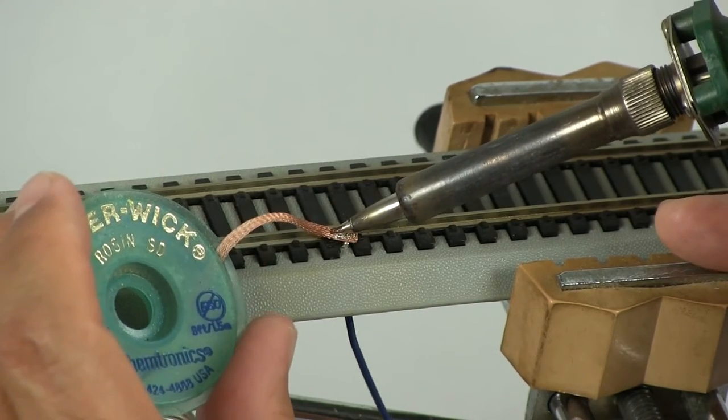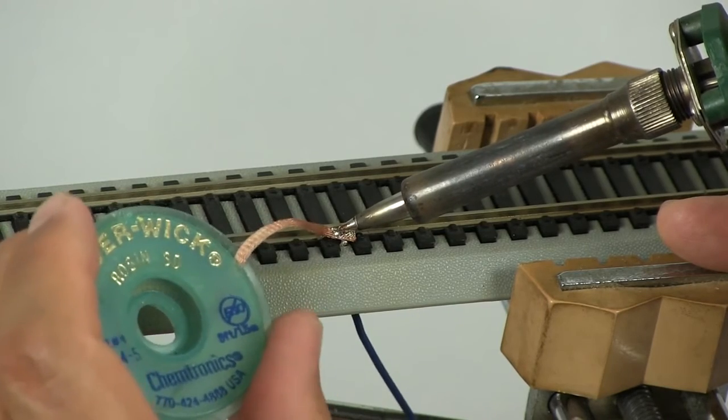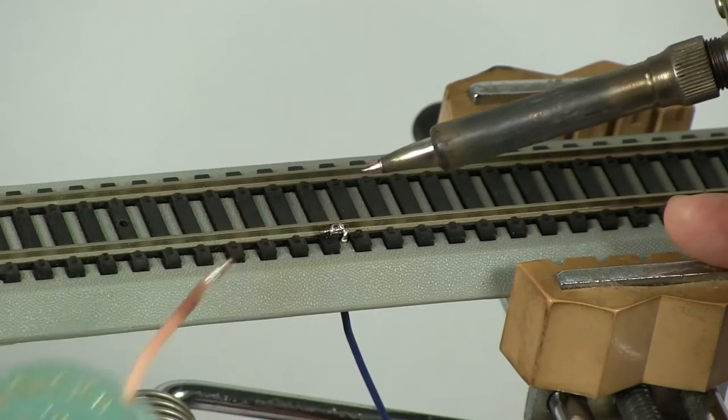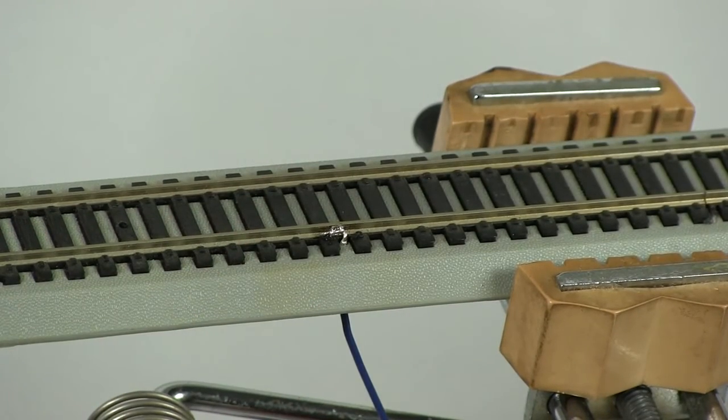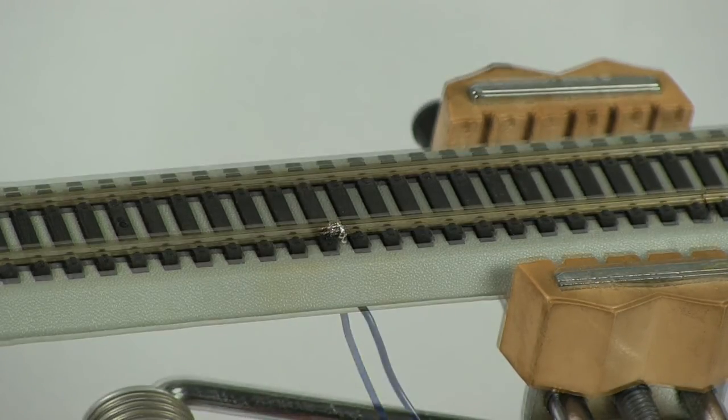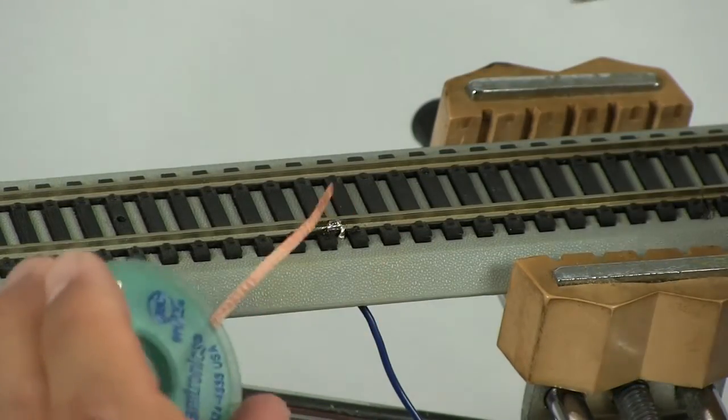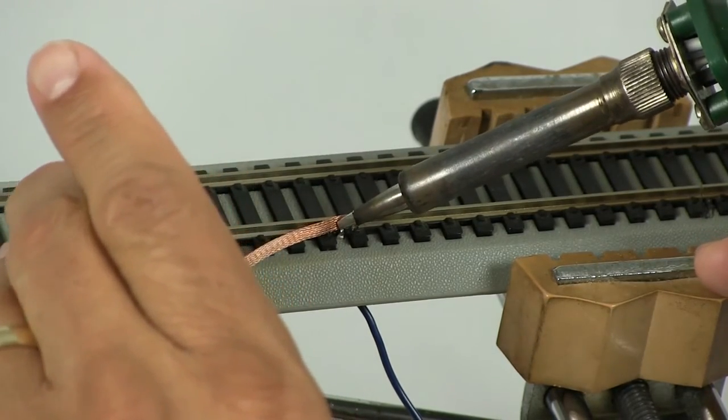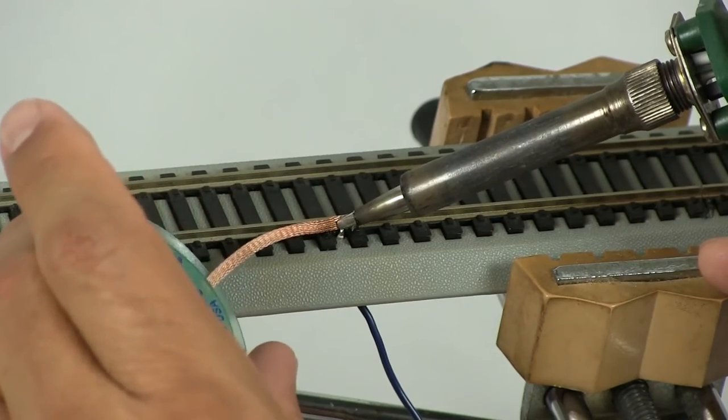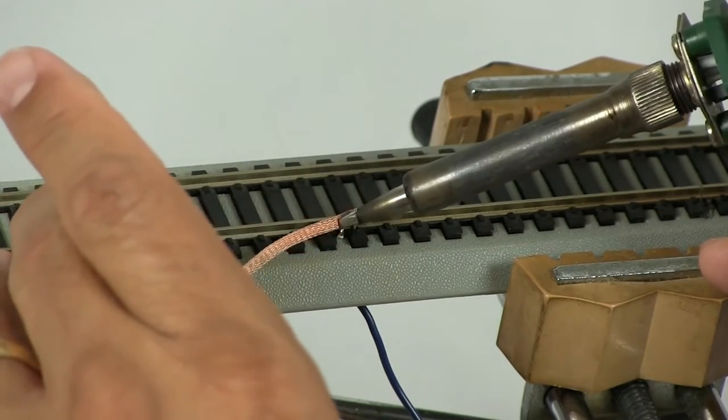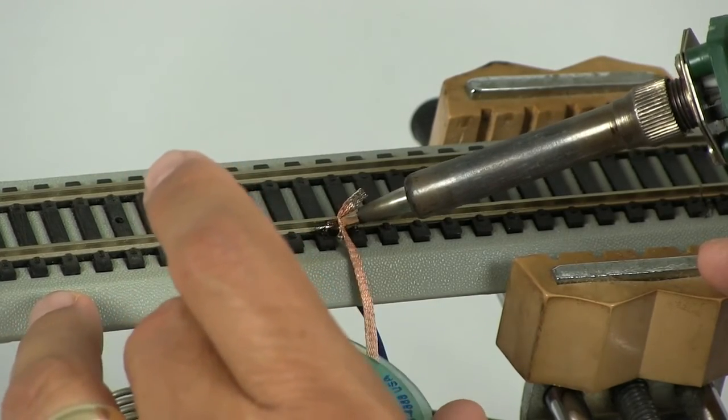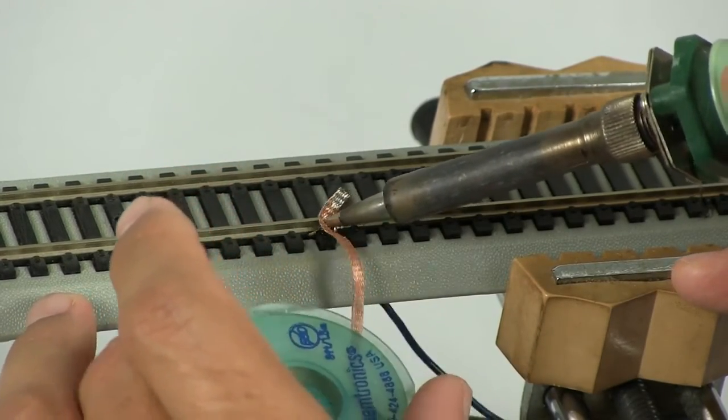You can move the iron around just a little bit to help it get started flowing. But you can see it drawing into the wick. And as soon as all of the solder is removed, remove your iron and your wick. We want to try to make sure to get all of the solder out. Sometimes you have to go back with your solder wick a second time.